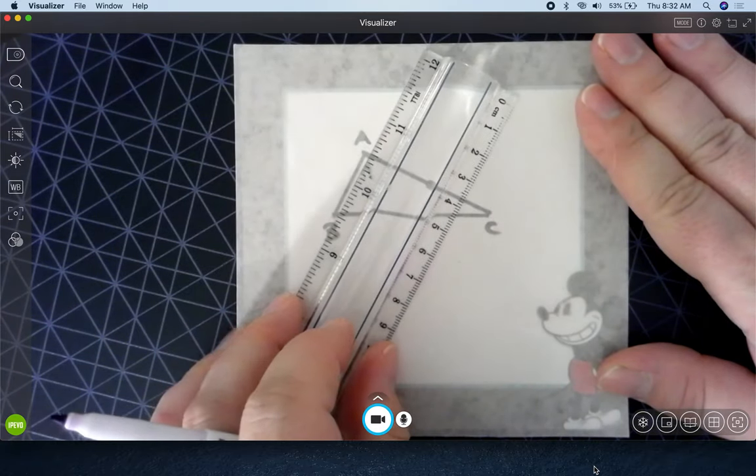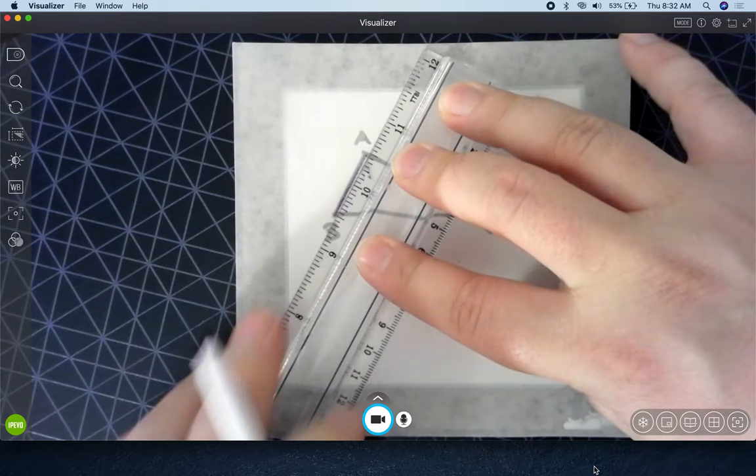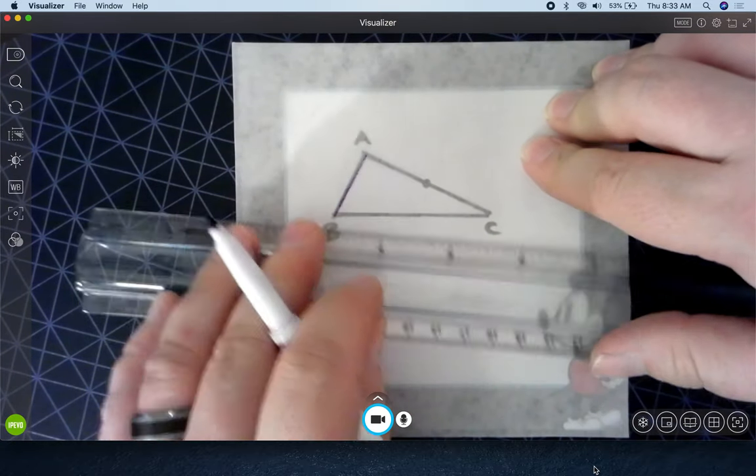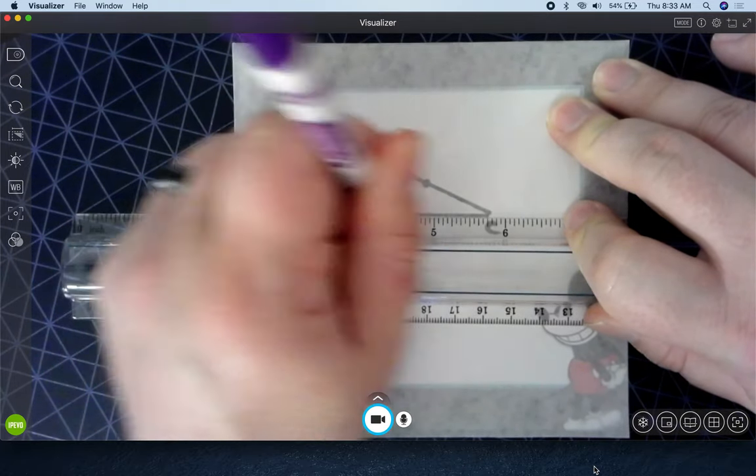We can take that midpoint and use it to rotate the patty paper. And just so you can see where these vertices end up. Let's go ahead and label them on the patty paper as well.